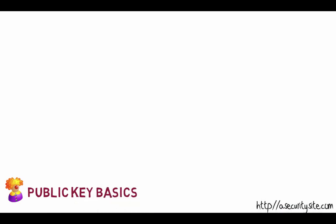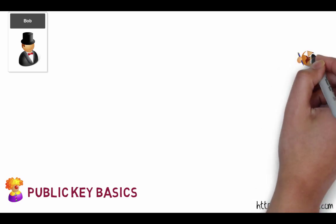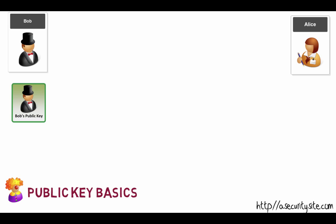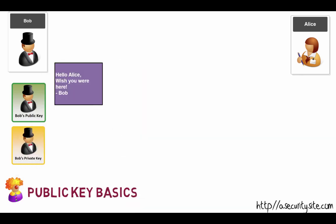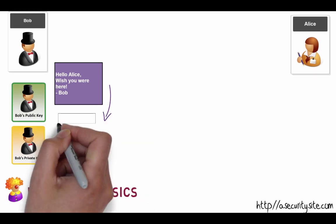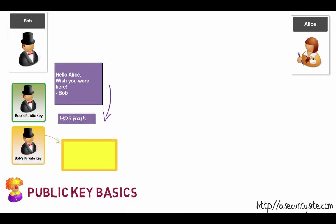Let's look at some basics of public key encryption. Here is Bob's public key and his private key. Here's the message he wants to send to Alice — he wants to make sure the message is secure, that he can identify himself properly, and that the message has been unchanged. The first thing we do is take a hash signature of the message — let's say an MD5 hash — and then we take Bob's private key and encrypt the hash value with it.